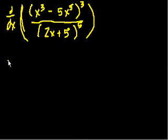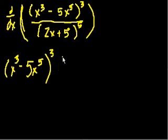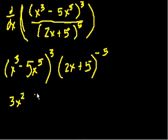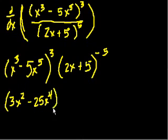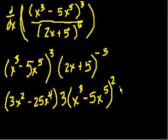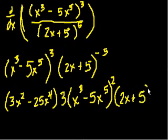So this is the same thing as taking the derivative of x to the third minus 5x to the fifth, all of that to the third power, times 2x plus 5 to the minus 5 power. And now we can use the product rule. Take the derivative of the first term using the chain rule: derivative of the inside first — that is 3x squared minus 25x to the fourth — times the derivative of the outside: 3 times the entire expression x to the third minus 5x to the fifth, squared. Then multiply it times 2x plus 5 to the minus 5.